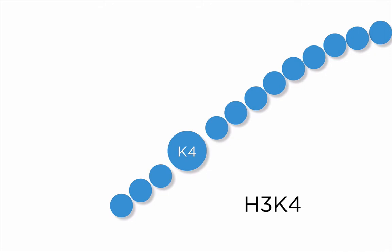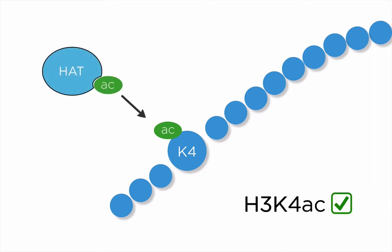Like all lysine acetylations, the acetylation of H3K4 leads to a more open chromatin structure and is therefore associated with transcriptional activation. Histone acetyltransferases and histone deacetylases regulate the acetylation of H3K4. So in terms of acetylation, H3K4 is nothing special and behaves like most other lysine residues in the nucleosome.